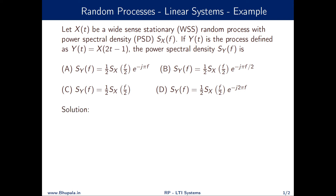In this video, we discuss an example related to a random process through an LTI system. Let X(t) be a WSS (wide-sense stationary) process with power spectral density SX(f). We define a new random process Y(t) = X(2t - 1), and we wish to find the power spectral density of Y(t) by selecting the correct answer from given choices.